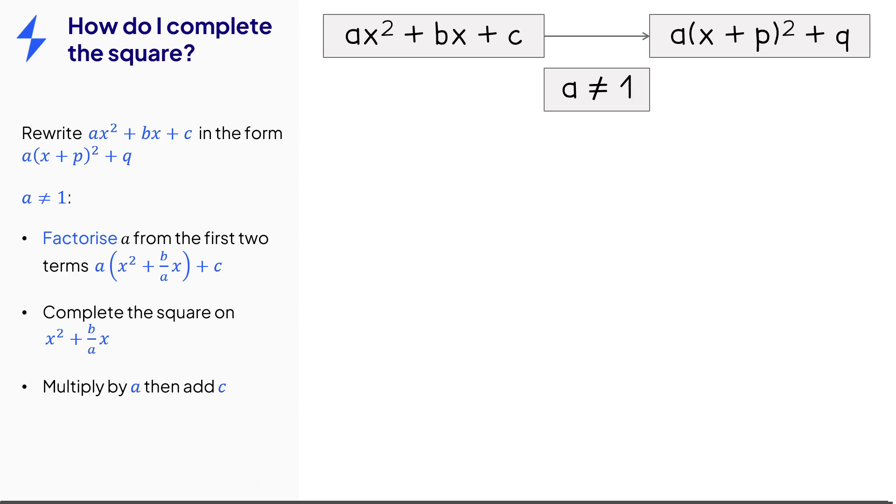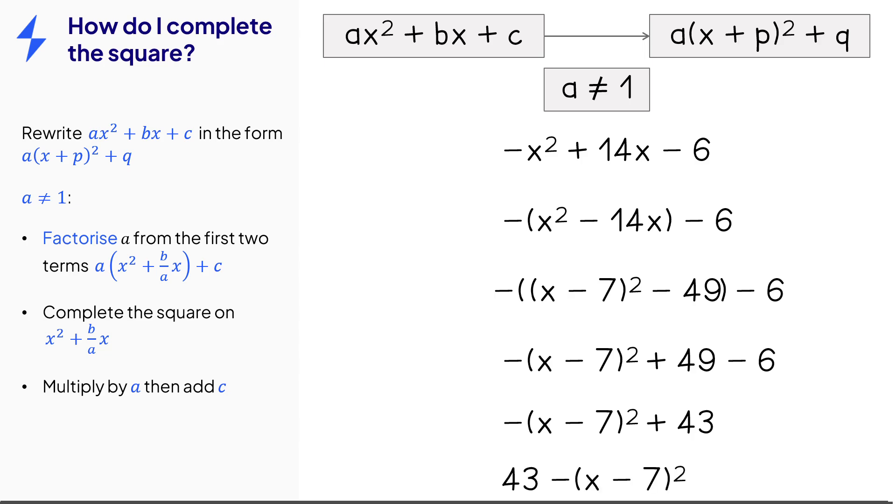We can also use this method when the coefficient of x squared is negative. So we can factorize out negative 1. We can complete the square on the bit inside the bracket. So half the 14 gets 7. Take away 7 squared. Then multiply all that by negative 1 and then take away the 6. Expand and simplify. It's better to start expressions with a positive term if possible so we prefer to write this with the 43 at the front. However you would still get full marks if you didn't do that in an exam.